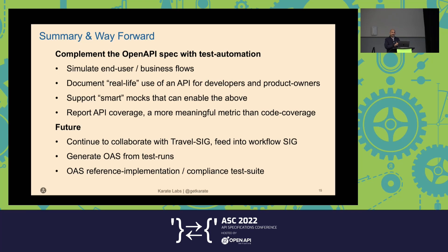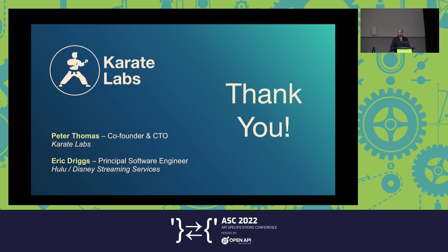There are a lot of ideas for the future. We are working with Stu and the Travel SIG, and there are exciting things we are talking about — some of our learnings may even feed into other SIGs such as the Workflow SIG. One of the ideas Eric and I are brainstorming is: can we actually generate OpenAPI specifications from your existing test suite? That would be quite cool, especially for enterprise users who are not starting with OpenAPI but have five years of tests. And there's been a lot of talk about whether the OpenAPI specification requires a compliance test suite — that's something we feel is badly missing. We would love contributions — if you have ideas, reach out to us.